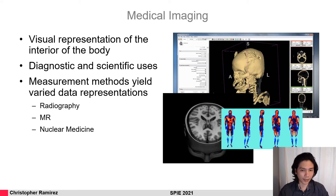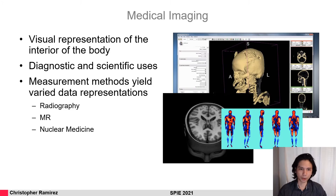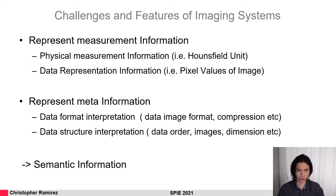The physical underlying values of this data may look completely different, and the structural form of the data may also be completely different. Medical imaging data needs to be able to encompass all these different data types and data ranges, and needs to be able to reproduce and store it in a uniform and correct way. So let's take a look at the features of imaging systems and what challenges they need to overcome. First, they need to be able to represent our measurement information — our physical measurement information, like Hounsfield units or absorption coefficients.